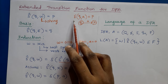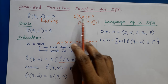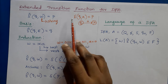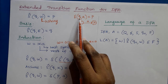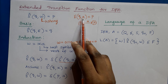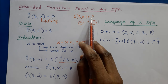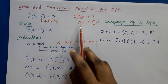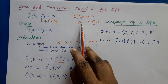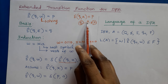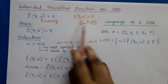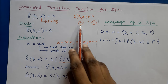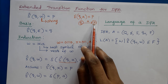The transition function for DFA takes 2 arguments as input and returns 1 as output. Delta is a transition function — it takes 2 arguments: the current state and input symbol, and it returns the next state. That is, if we are in state Q and A is the current input symbol, then the next state of the DFA is P, written as delta(Q, A) = P.